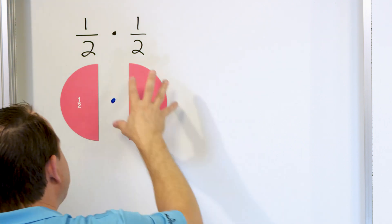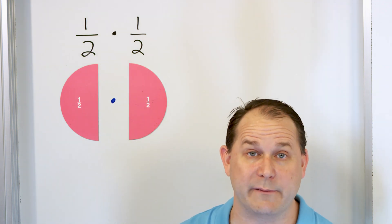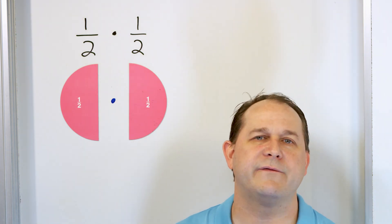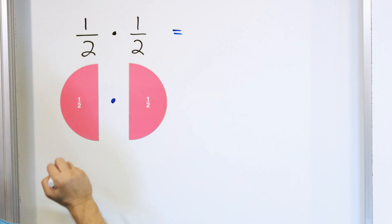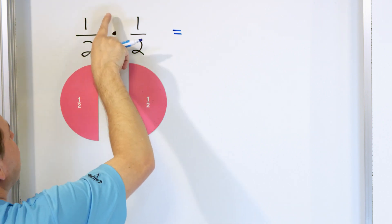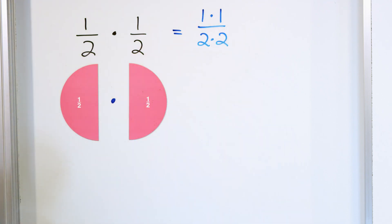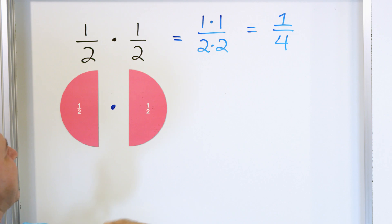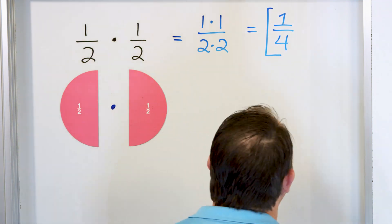Before we talk about what this means, let's calculate the answer. When we multiply fractions — also when we divide fractions — we do not need a common denominator. We need a common denominator when we add and subtract fractions, but not when multiplying or dividing. It's actually much easier. To multiply fractions, all you do is multiply the numerators together and multiply the denominators together. So we multiply one times one in the numerator and two times two in the denominator. One times one is one and two times two is four. So the answer is one fourth. And we always ask ourselves, can we simplify? We can't in this case — one fourth is the simplest form.